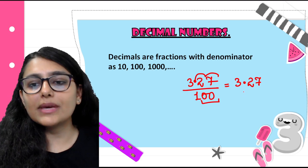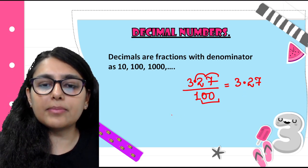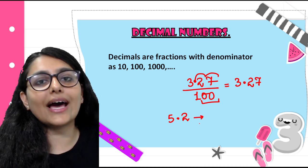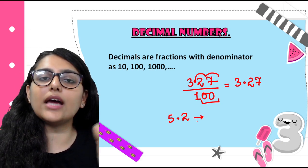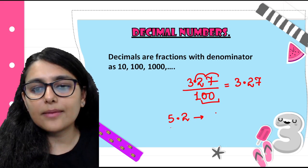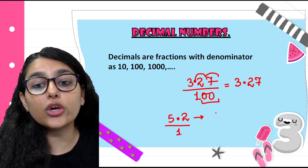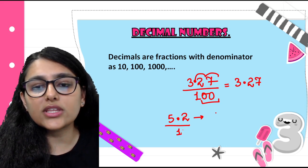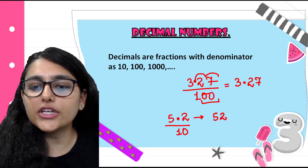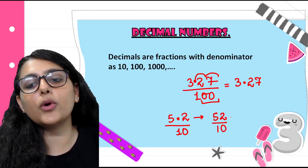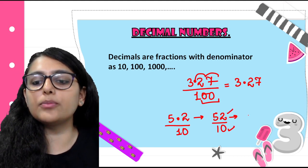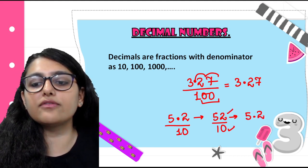So 3.27. Basically, if I have any number — for example 5.2 — I can convert it into a fraction whose denominator will be in the form 10, 100, 1000, or 10,000. Where there is a decimal, you put 1 below it, and for each digit after the decimal you add a zero. So this can be written as 52 upon 10. Again, 52 upon 10 converted to decimal: count the zeros, skip that many digits from the right, and put the decimal. So this becomes 5.2.